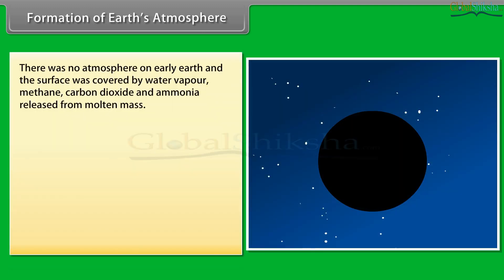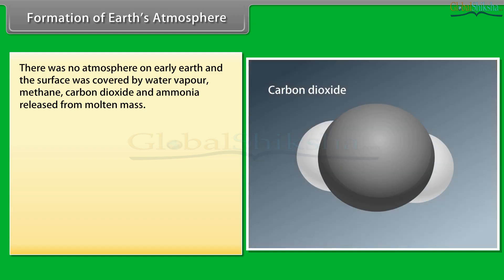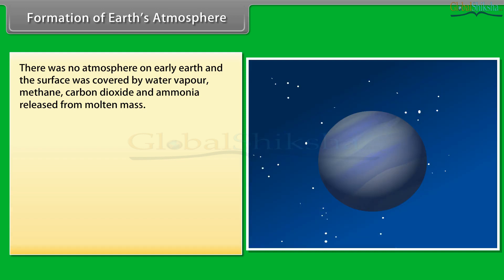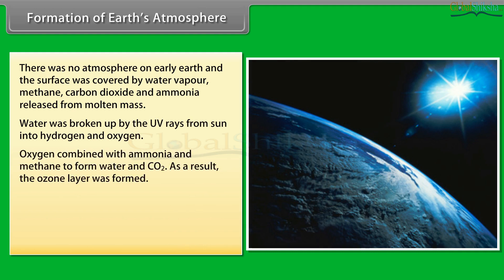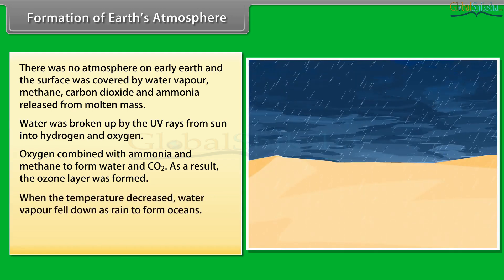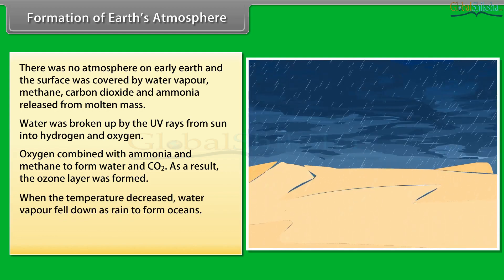There was no atmosphere on early Earth. The surface of Earth was covered by water vapor, methane, carbon dioxide and ammonia released from molten mass. Water was broken up by UV rays from the sun into hydrogen and oxygen. Oxygen combined with ammonia and methane to form water and CO2. As a result, the ozone layer was formed. When the temperature decreased, water vapor fell down as rain to form oceans.